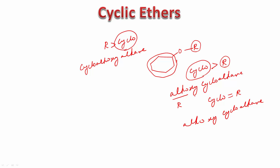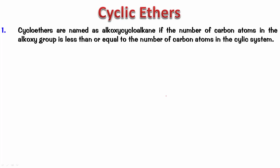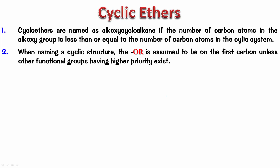If it is alkoxy cycloalkane and there is no other substituent, then we don't have to number it — it is automatically treated as position number one. You only need to number if there is a double bond or another substituent. The OR group is assumed to be on carbon one unless other functional groups having higher priorities exist.